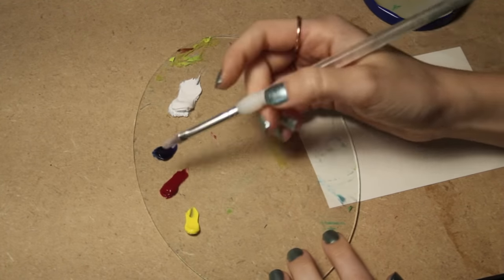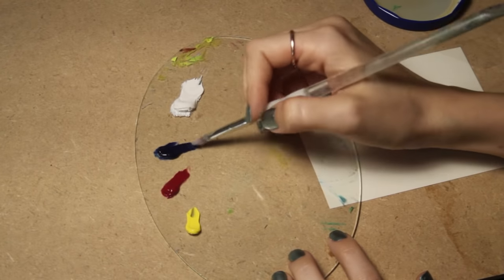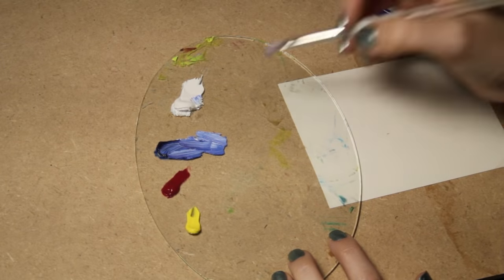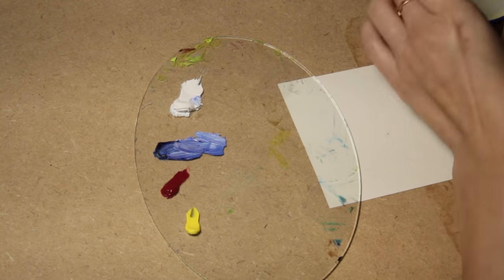I have a little lid from a jar where I put a tiny bit of gamsol in, and you'll see me gradually dip my brush in there to pick up a little bit of it to mix in with my paint. So I started out by mixing ultramarine blue with a little bit of titanium white, then I painted a blue horizontal strip on the canvas.